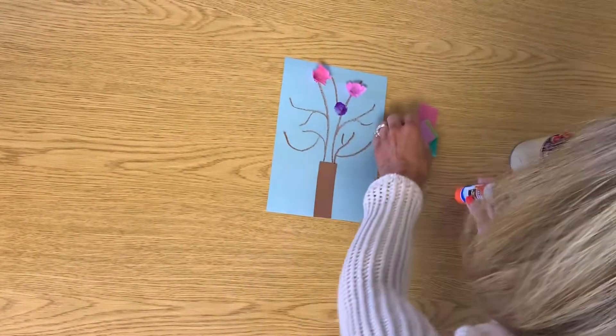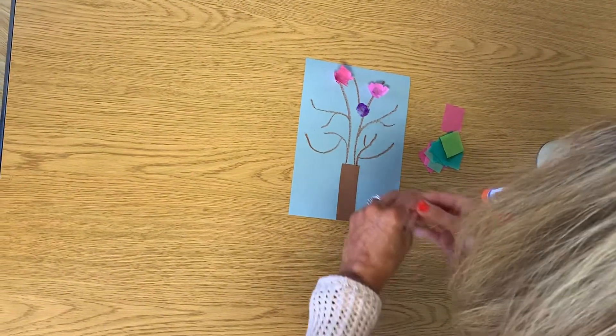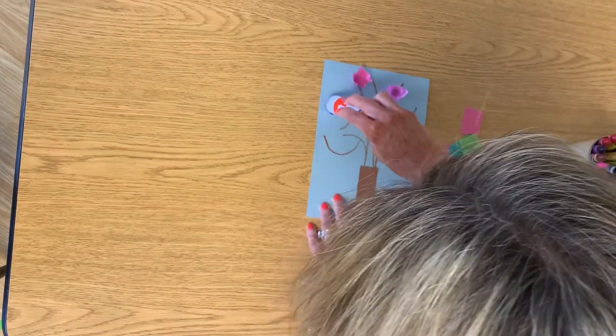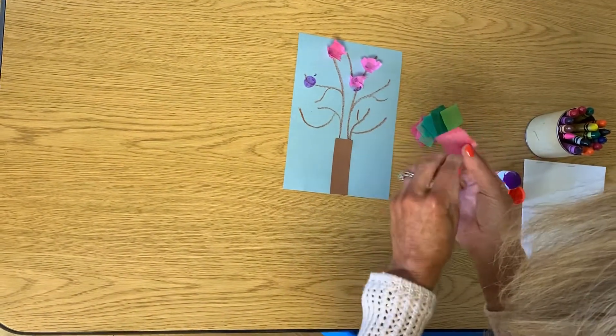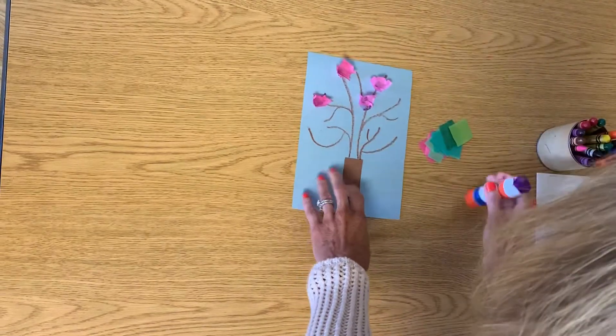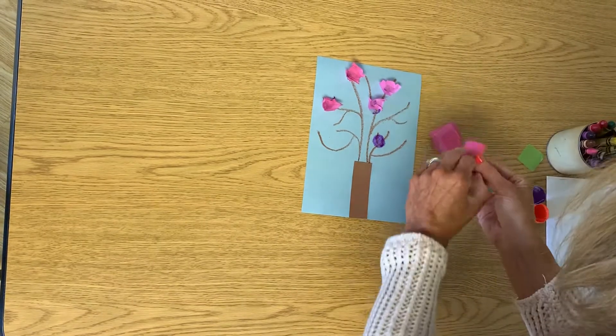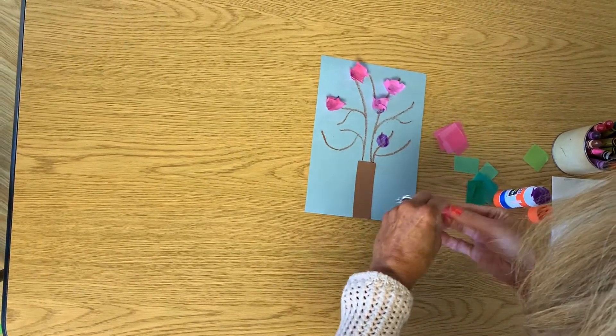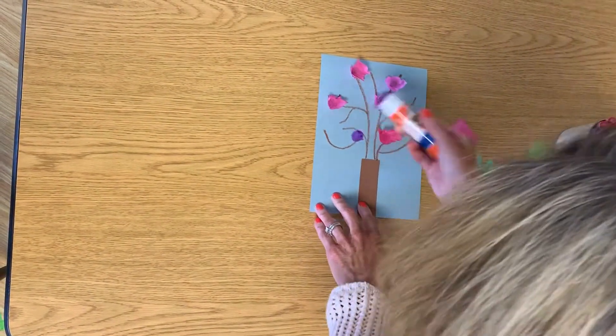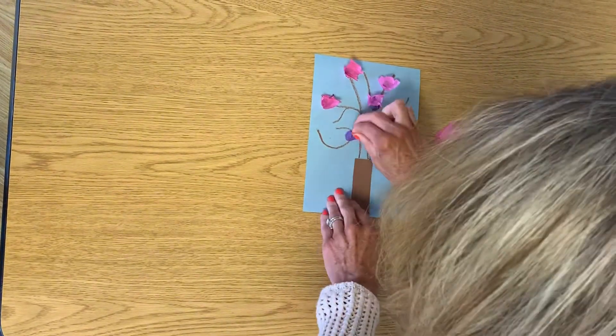And I'm just going to keep moving on my tree, making sure I get blossoms all over. I don't want them all in the same spot. I'll wrap it around the end of my finger and glue it on. And I want to keep going until I've used all of my pink tissue paper.